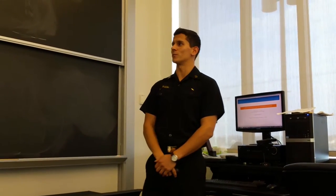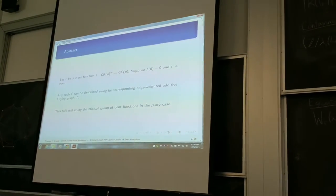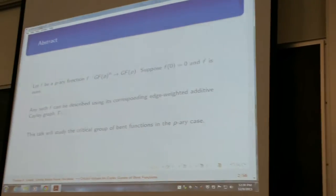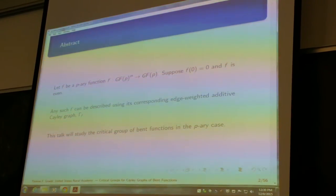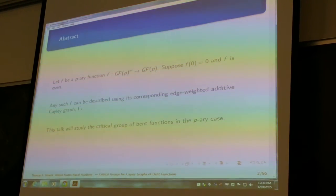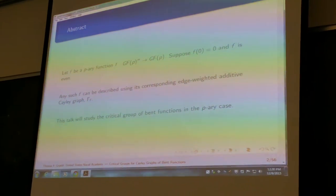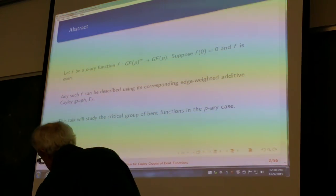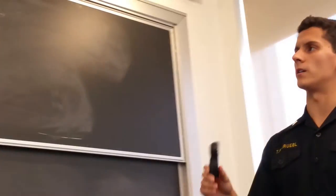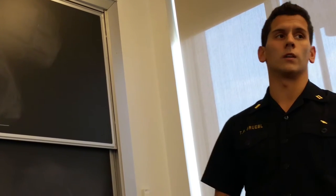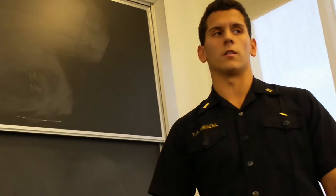Good afternoon, everyone. I'm first class Grubel, and I will be presenting on critical groups for Cayley graphs of bent functions. I apologize if I make any mistakes with the clicker. I'm new to it. So here's what we're going to talk about today. Of note is that we're going to suppose that f(0) equals 0 for all of these bent functions, which is an okay assumption because if f(0) is not equal to 0, you simply add a constant to make f(0) equal to 0 and the function is still bent.